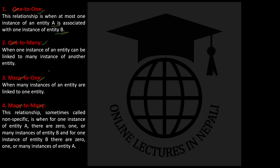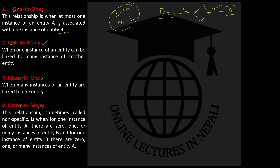Next are one-to-many and many-to-one. In one-to-many, for a single instance of the first entity set, there can be multiple instances of the second entity set associated with it. In many-to-one, many instances of the first entity are linked to only one instance of the second entity.